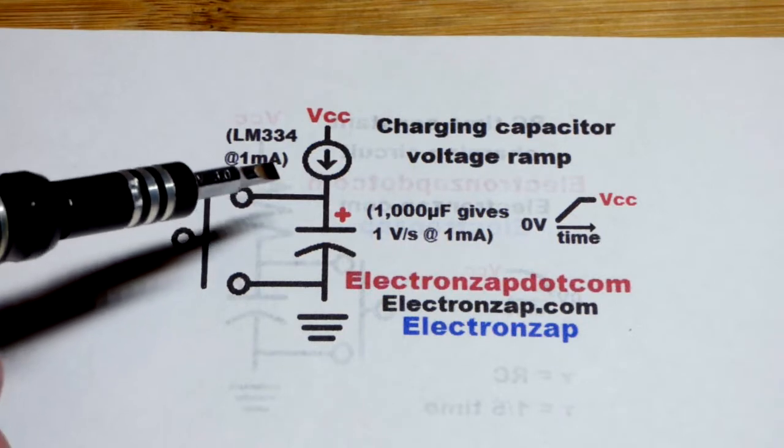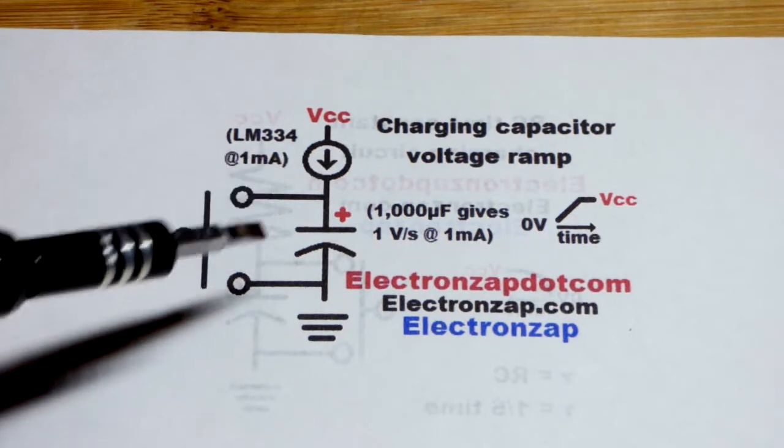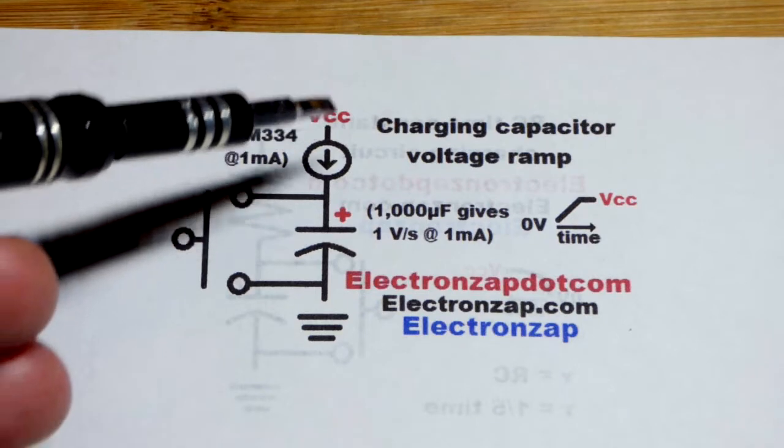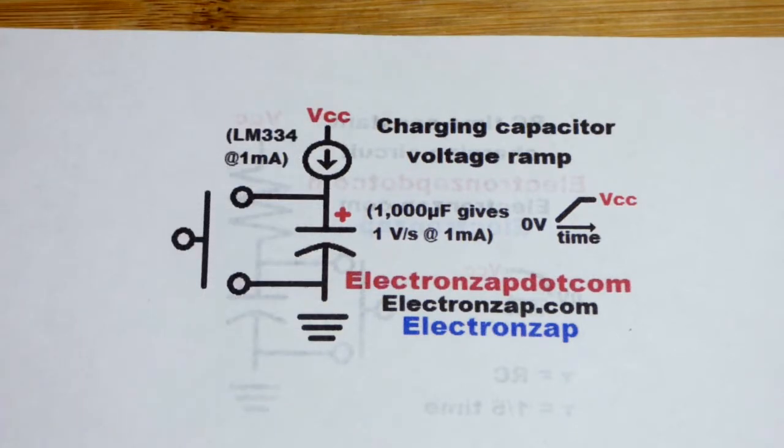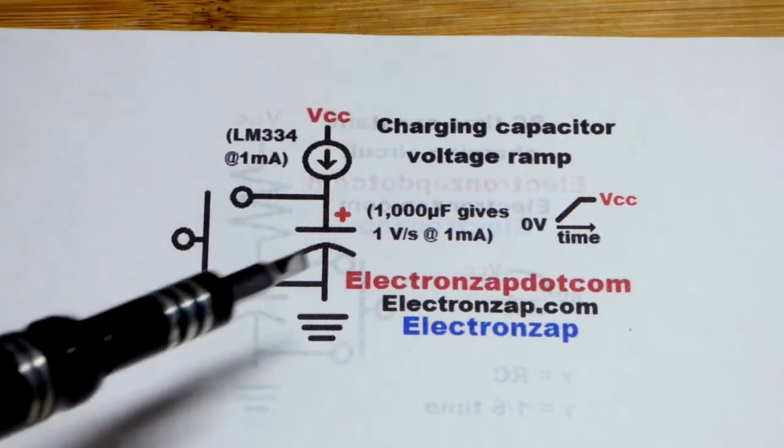We're going to have one milliamp of current. I'm using the LM334. I covered that in the last video. It provides one milliamp of current to series components as long as the power supply voltage is high enough.